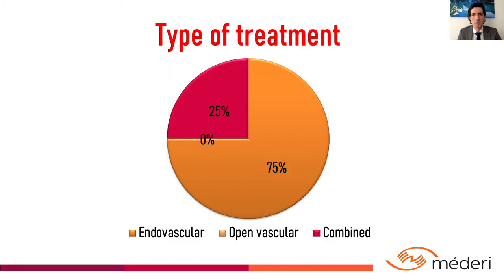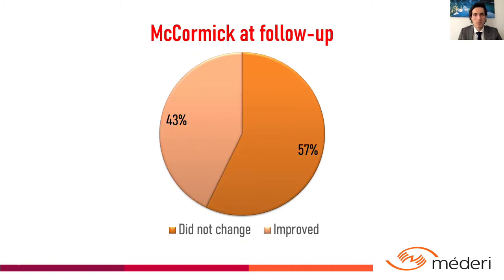Regarding the treatment options, six of eight patients received endovascular treatment and two of eight patients received combined endovascular and open vascular surgery. Regarding the outcome, on last follow-up, three of seven patients had an improved McCormick scale, and four did not change.